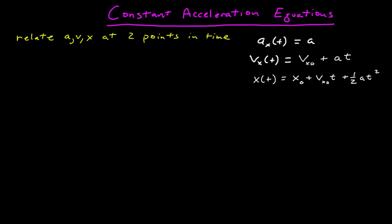So before, we found the three functions in time for constant acceleration: acceleration, velocity, and position in one dimension. The acceleration is constant. The velocity is given by the initial velocity — the velocity at t equals zero — plus a·t. And the position as a function of time is given by the position at t equals zero, plus the initial velocity times time, plus one half a·t squared. These functions are valid for all time.